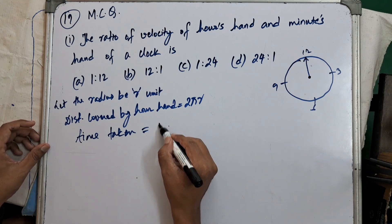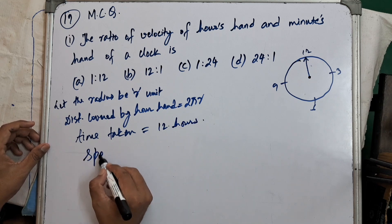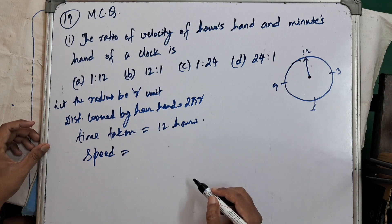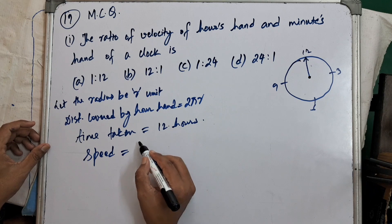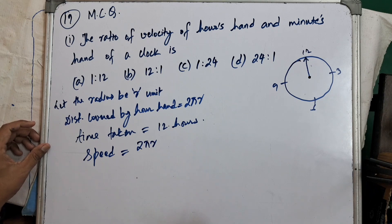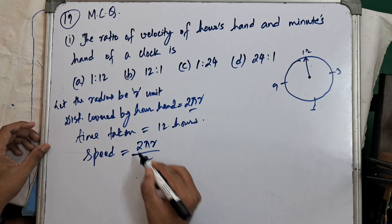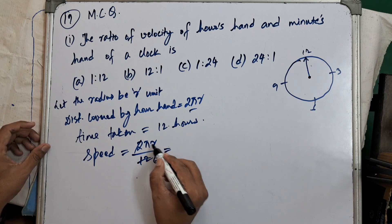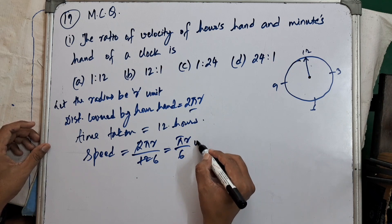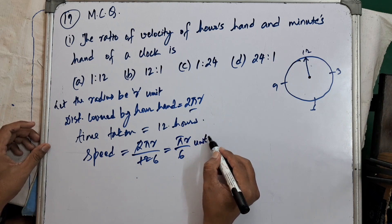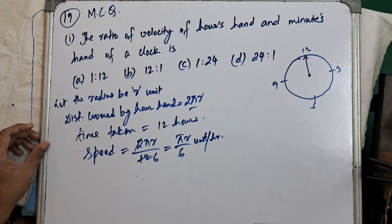Time taken by the hour hand is 12 hours. Speed is given by distance upon time. Speed of the hour hand equals 2πR divided by 12 hours, which gives us πR/6 units per hour.